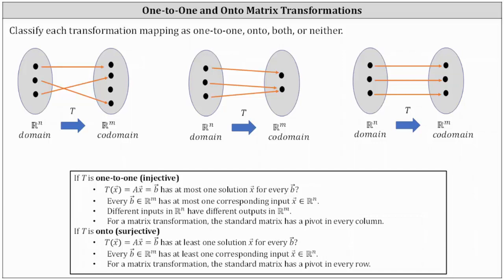We're asked to classify each transformation mapping as one-to-one, onto, both, or neither. Looking at our notes below, we'll focus on the second bullets. If a transformation is one-to-one or injective, every vector B in our M has at most one corresponding input vector X in our N. And if a transformation is onto or surjective, every vector B in our M has at least one corresponding input vector X in our N.